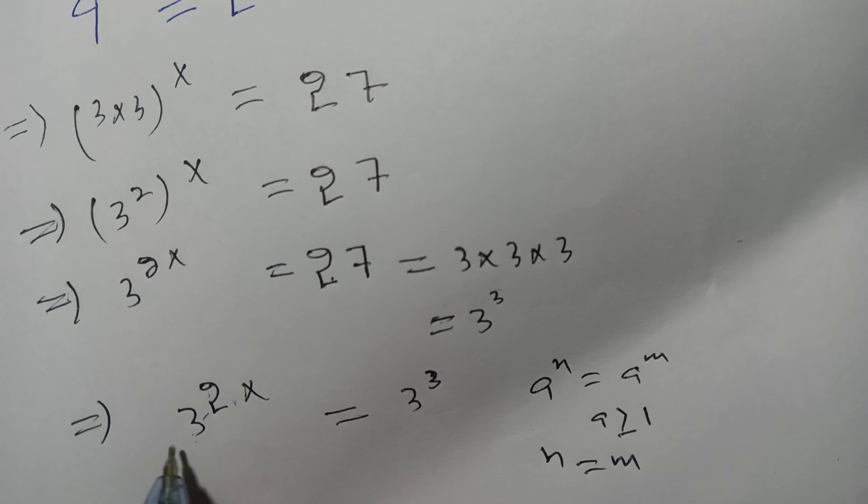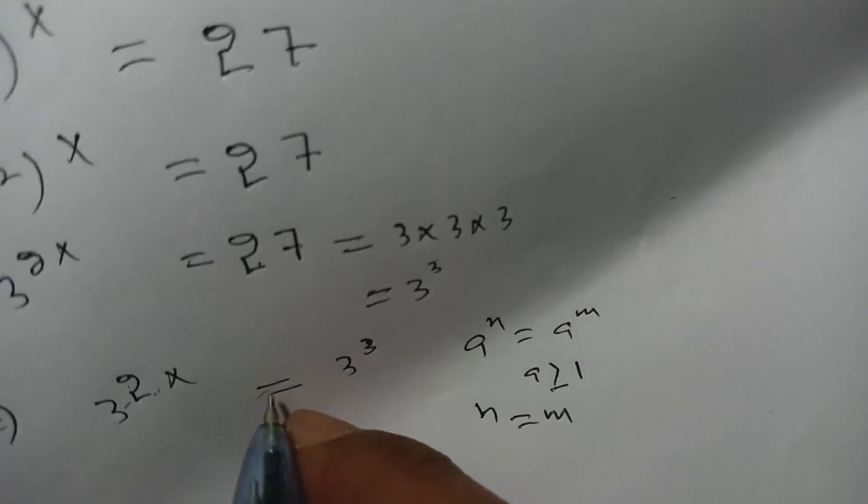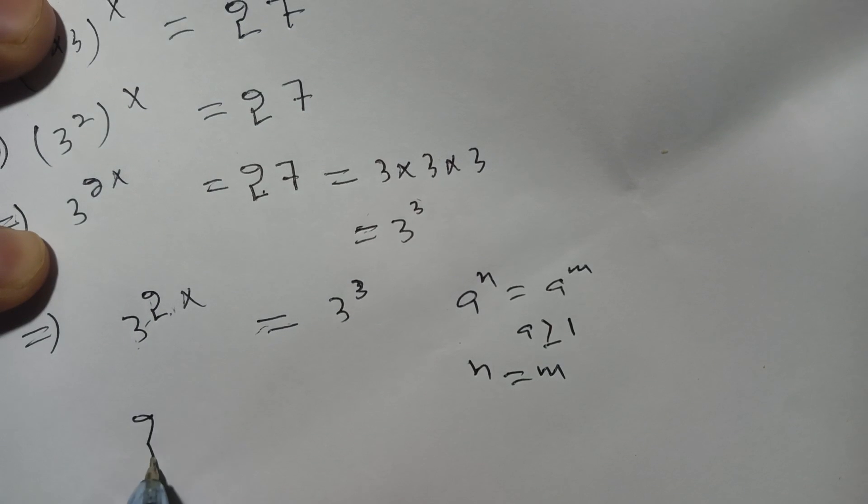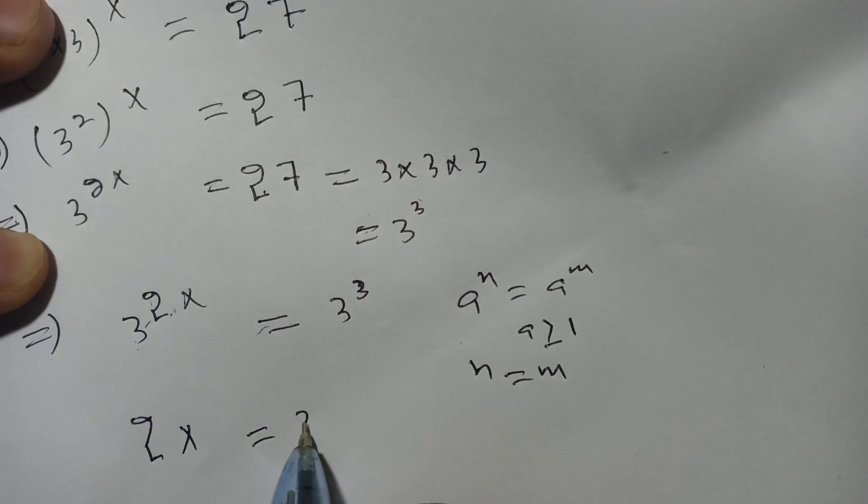Here bases are the same, 3 and 3. We can compare the powers, means that 2x is equal to 3.